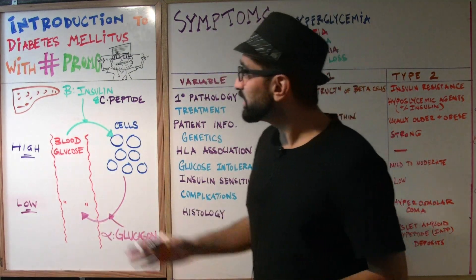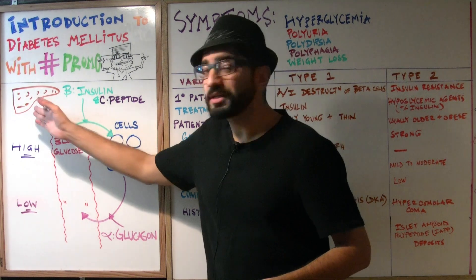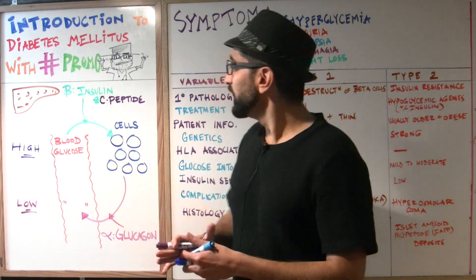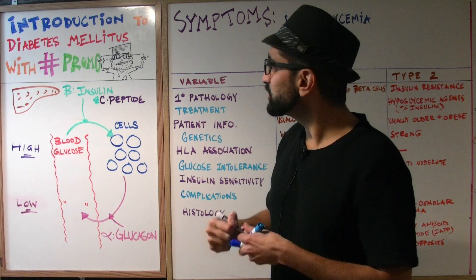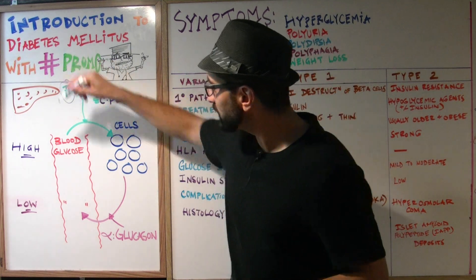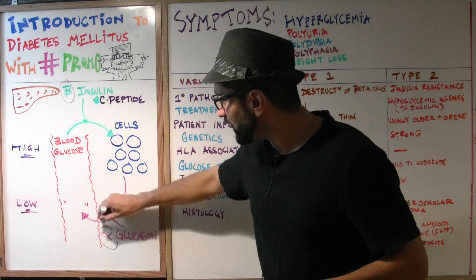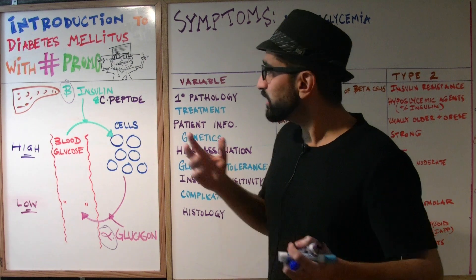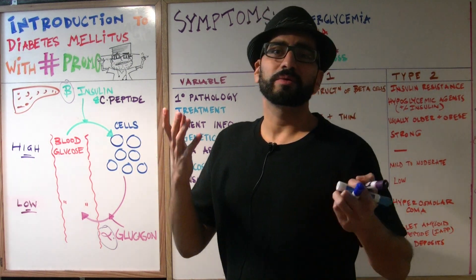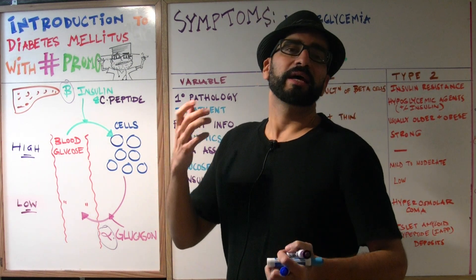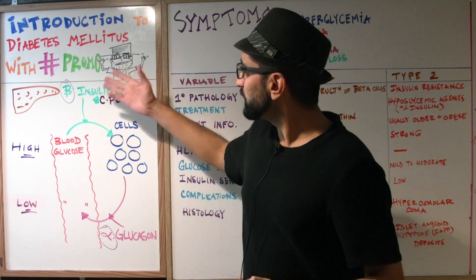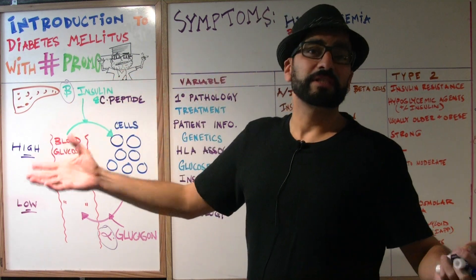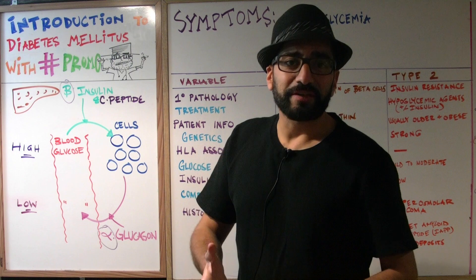Pay attention over here — we've got our funny looking organ which is the pancreas. I want you guys to pay specific attention to these two areas: we have a beta cell and we have an alpha cell. Keep that in mind. Diabetes is a big section, and when we talk about glucagon and insulin we need to discuss it at a molecular level.